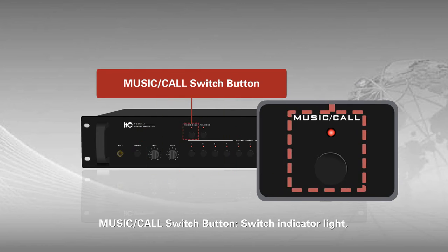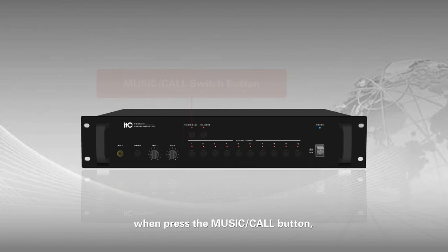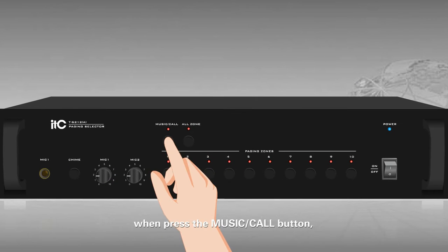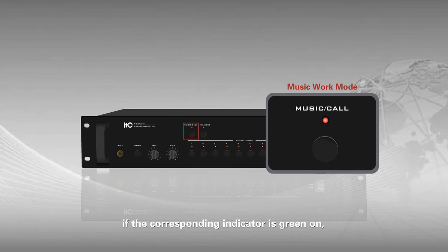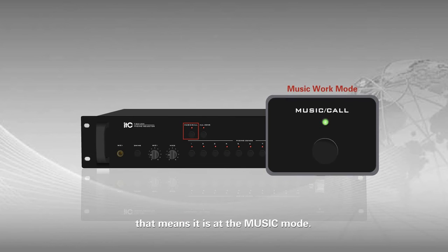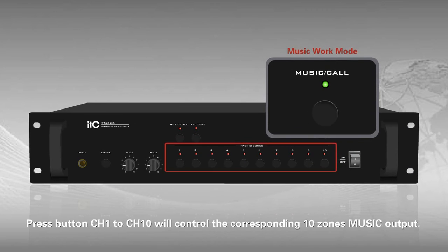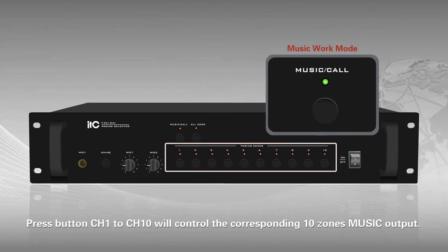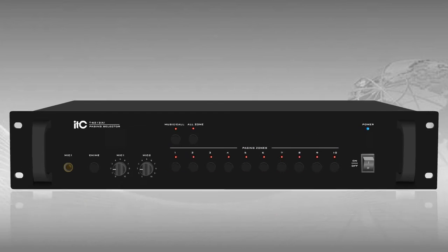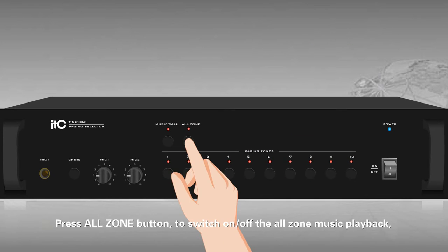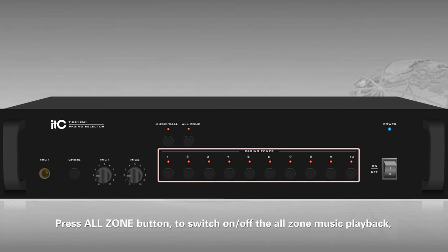Music call switch button and switch indicator lights. When the music call button is pressed and the corresponding indicator is gray, that means it is in music mode. Press button CH1 to CH10 to control the corresponding 10 zones' music output. Press the all-zone button to switch on or off all zones' music playback.